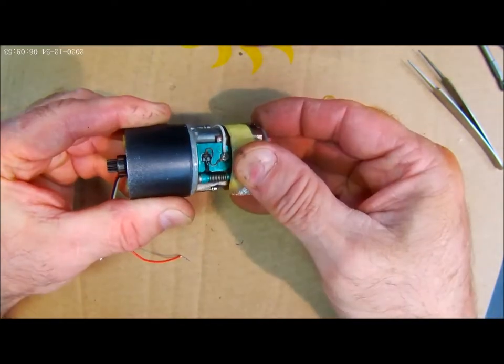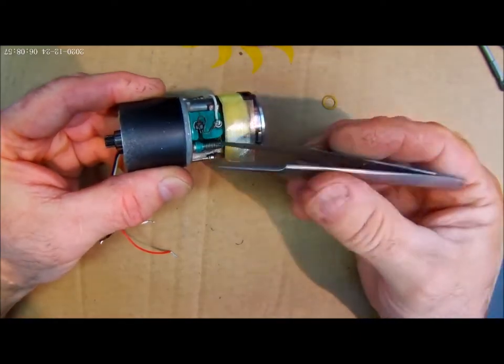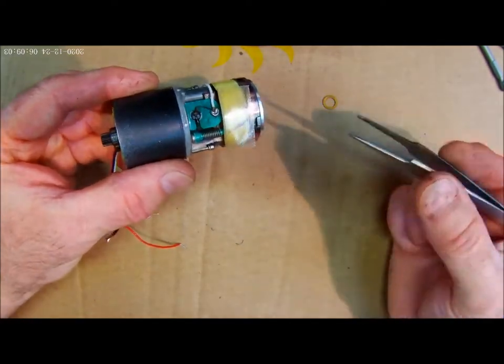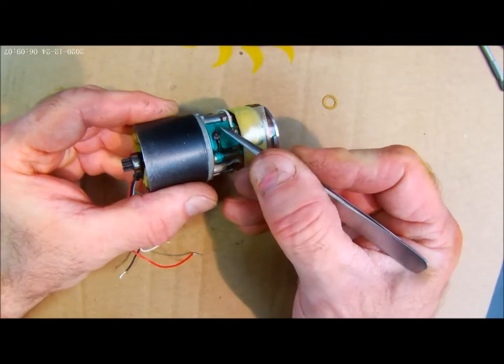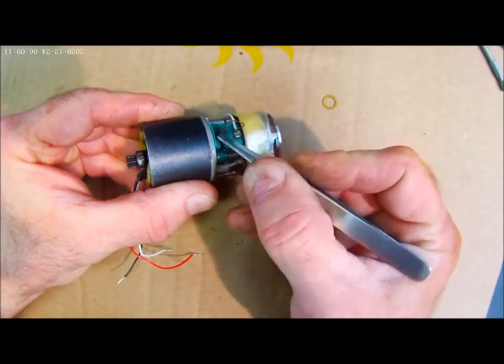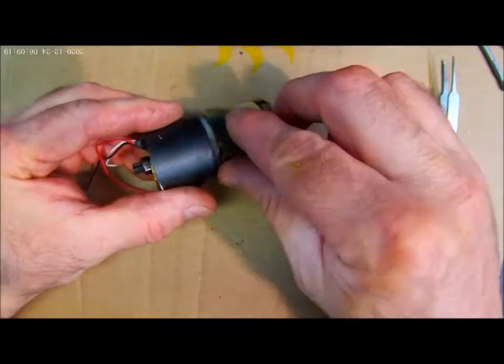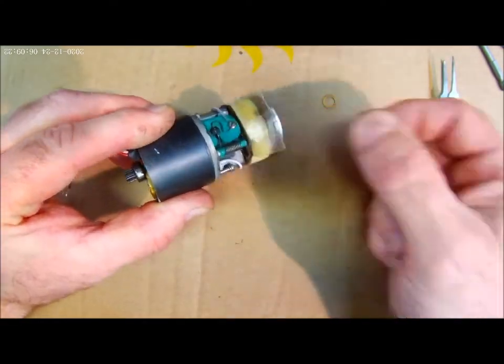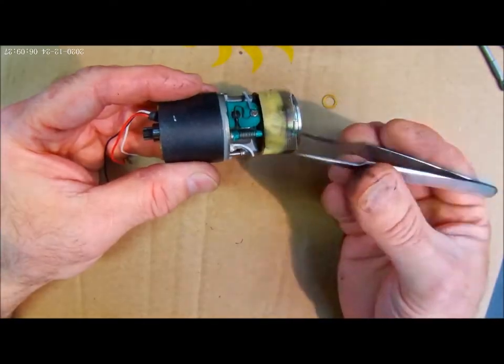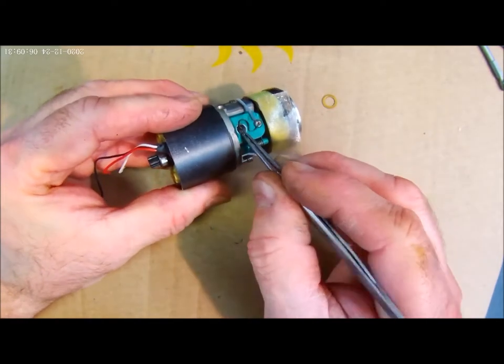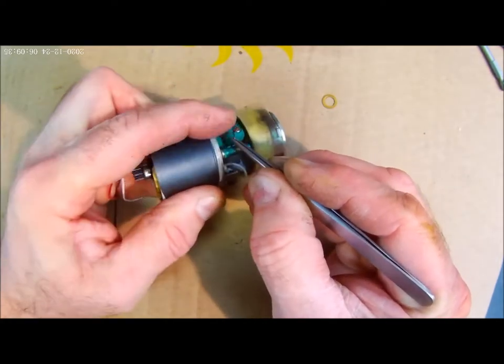Using a tweezer, we're going to remove the old brushes. You can see they're in good shape and that's why this motor is running quite well. But I think we can make a difference by replacing the brushes and the bearings.